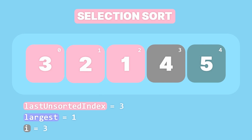Now 4 and 5 are in the correct sorted position, so we decrement the last unsorted index and it becomes 2. Everything from index 0 to index 2 is part of the unsorted partition while everything from index 3 to the end of the array is part of the sorted partition. After the swap we set largest to 0 and i to 1 for the next traversal, and we go through the same steps again: traverse the array, compare numbers, find the largest and if necessary swap the largest element into the last position of the unsorted partition. We continue doing this until the last unsorted index is equal to 0, at which point the entire array is sorted.